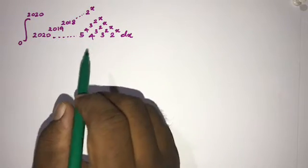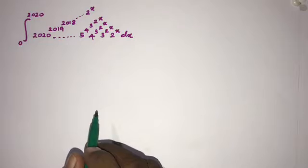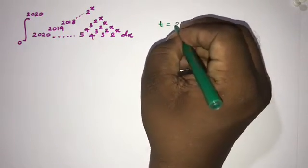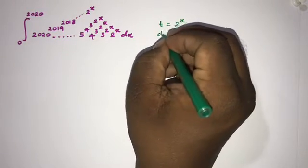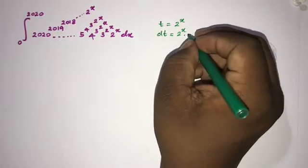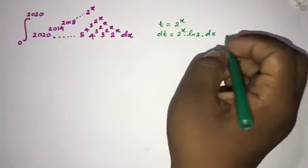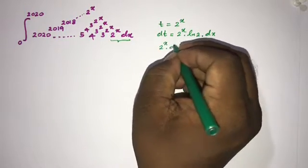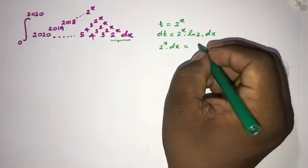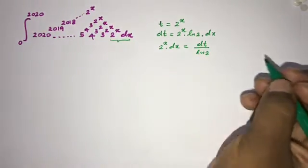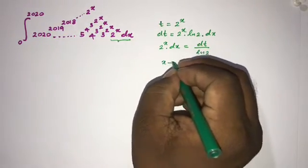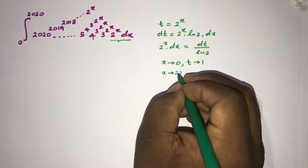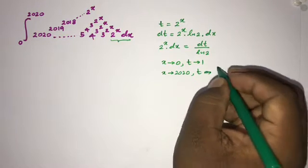To begin, we can use the substitution method. Let t equal 2 raised to the x. Differentiating, dt equals 2 to the x times the natural log of 2, dx. Here we have 2 to the x times dx, so isolating that gives us 2 to the x dx equals dt over natural log of 2. For the lower limit, when x approaches 0, t approaches 1.